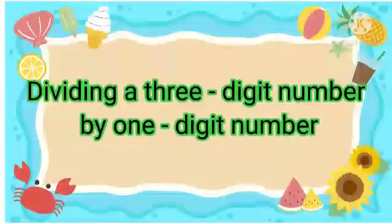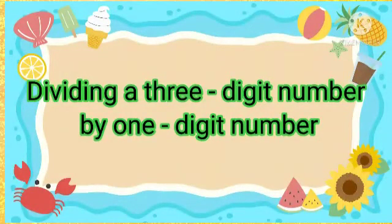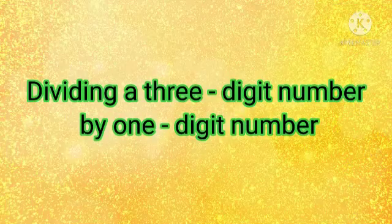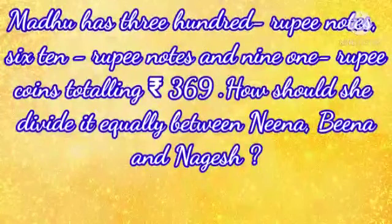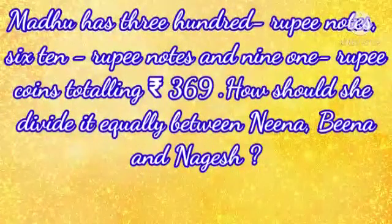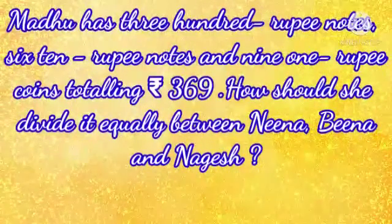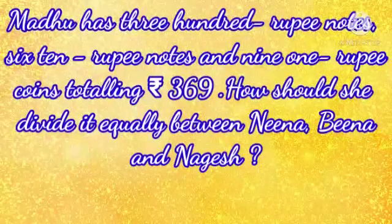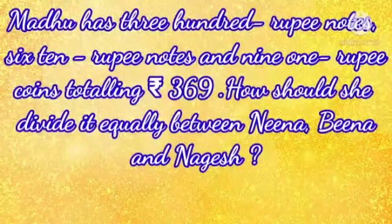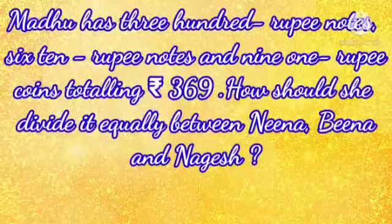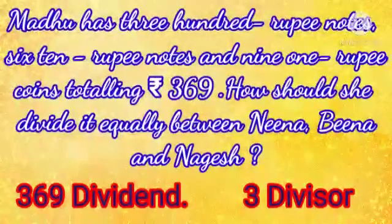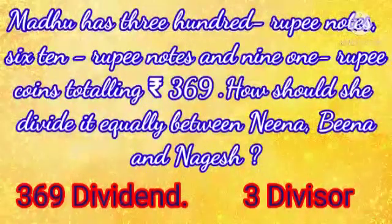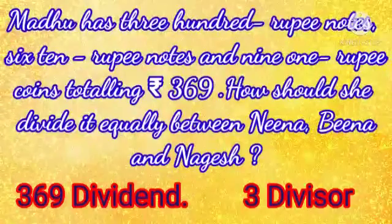Dividing a 3 digit number by a 1 digit number. Now, see the question here. Madhu has 300 rupee notes, 6 ten rupees notes and 9 one rupee coins, totaling rupees 369. How should she divide it equally between Nina, Bina and Nagesh? So, 369 is your dividend. 3 is the divisor. First, let us divide the 3 notes of 100 rupees.